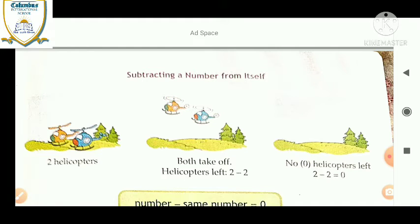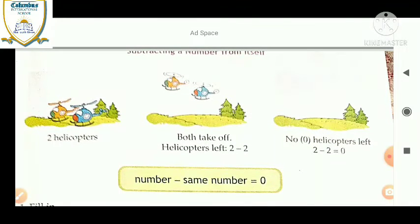Here the question has given, 2 helicopters, both take off, helicopters left. Now here the two helicopters are given. Both take off, the helicopter left. 2 is minus 2. No helicopters left. It means zero helicopters left. 2 minus 2 is equal to zero.